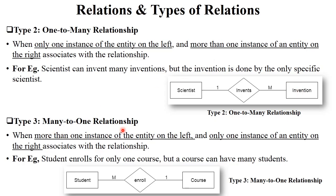The next is many-to-one relationship — more than one instance of an entity on the left side and only one instance on the right side. For example, many students enroll in only one course. The course could be database management system, and there are multiple students enrolled in that particular course. This is called a many-to-one relationship.